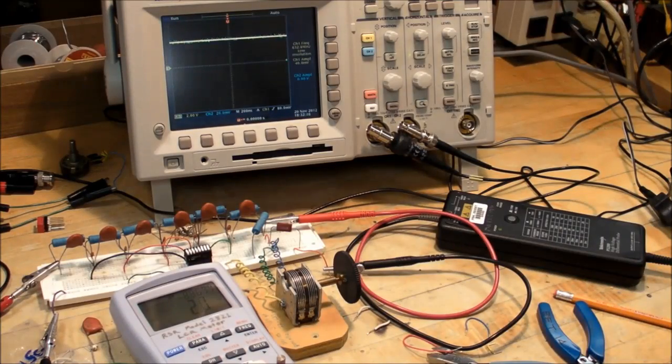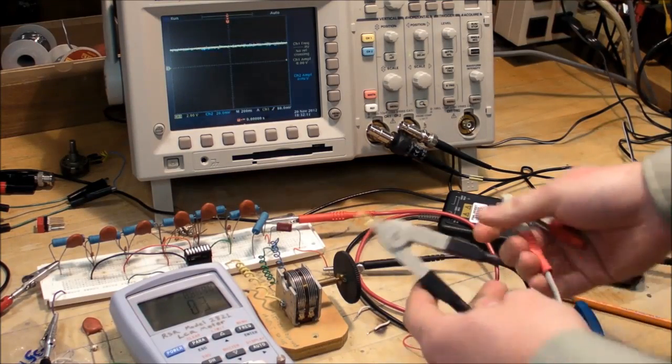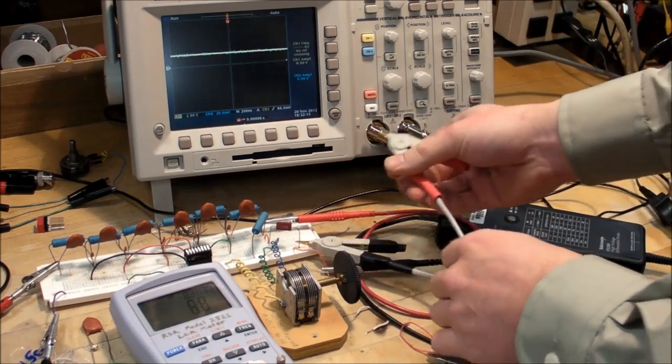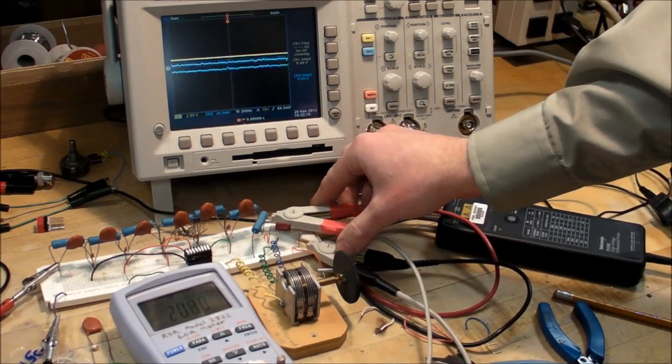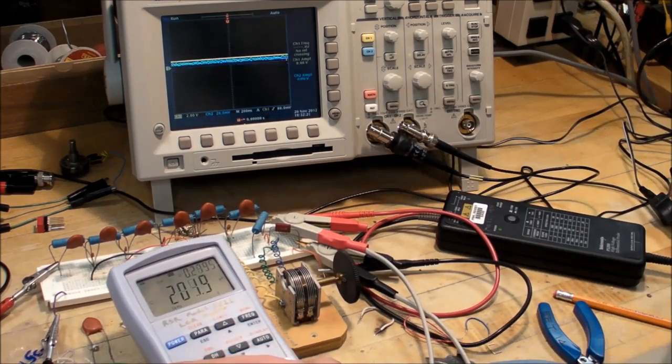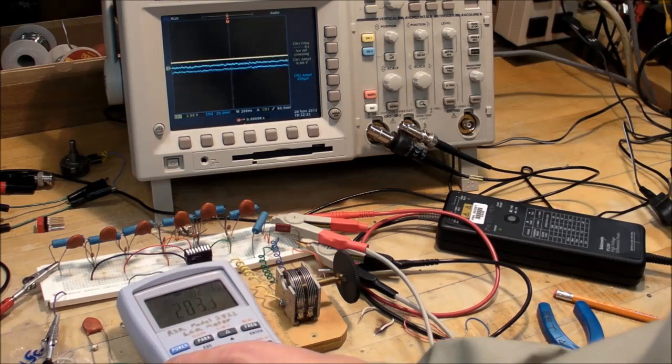Now I'm going to take a capacitance measurement again, turn off the function generator and hook this up. I'm getting about 200 picofarads now.